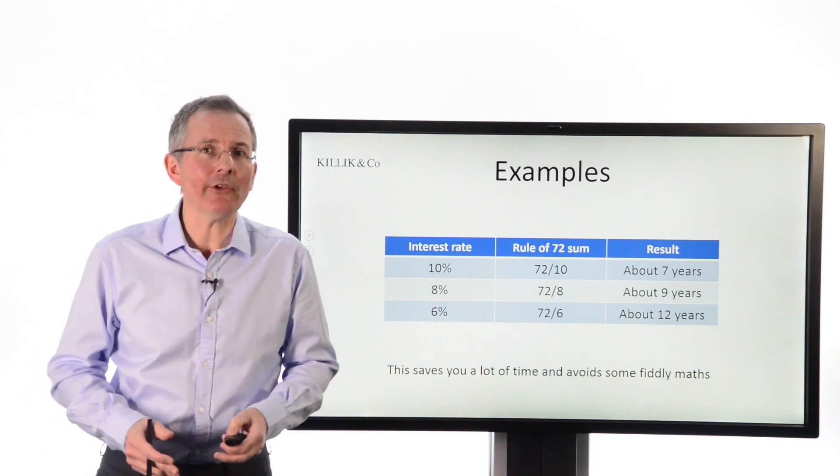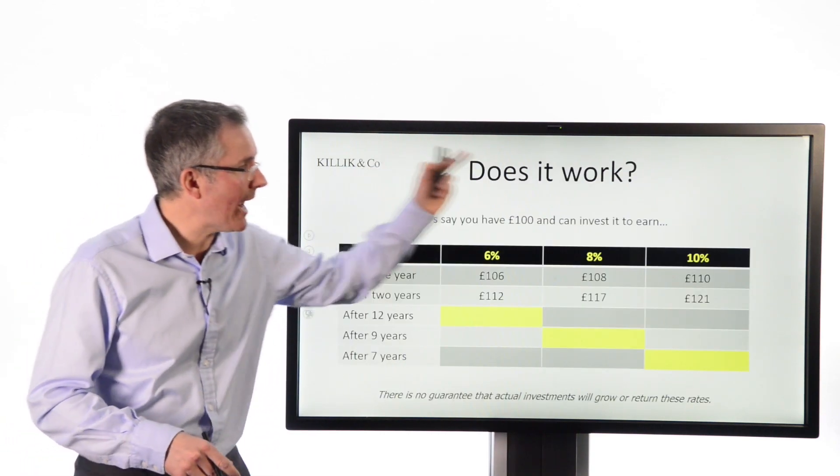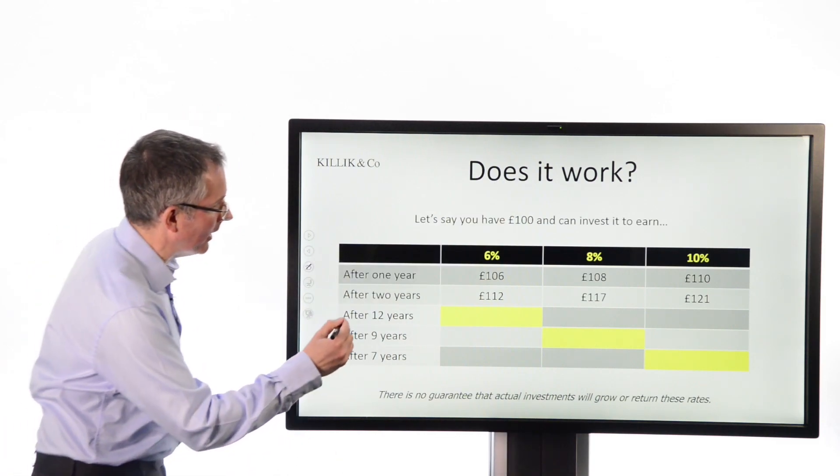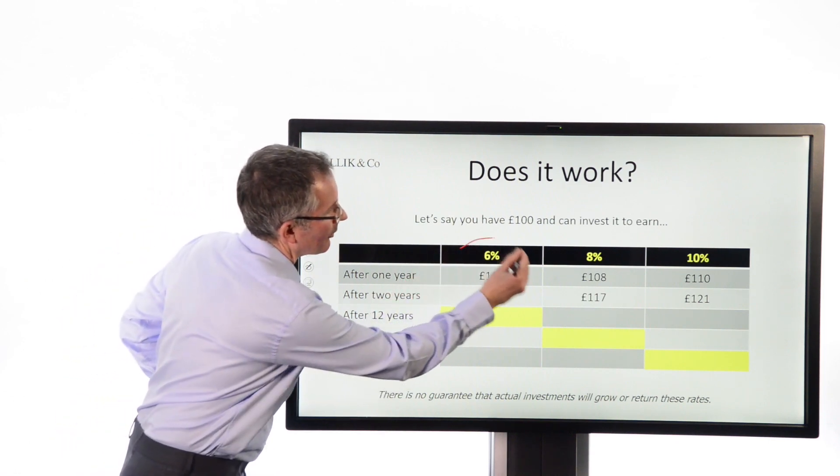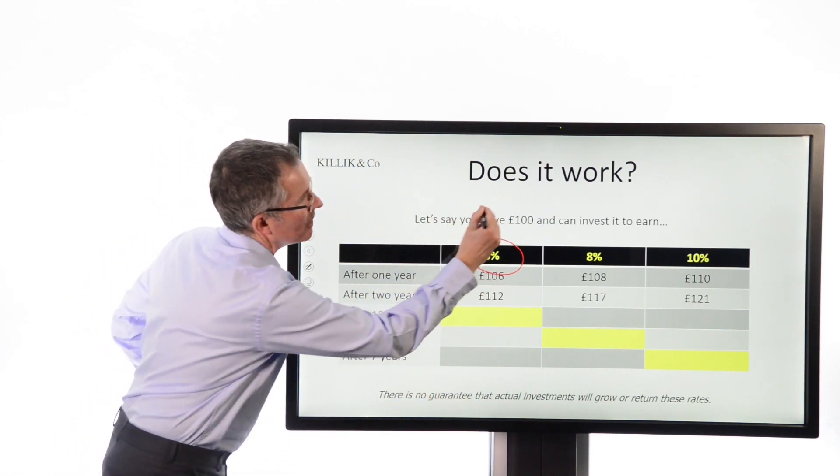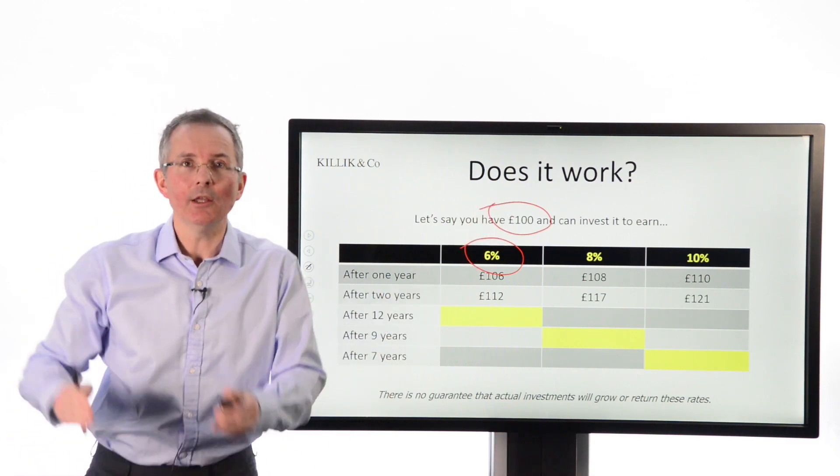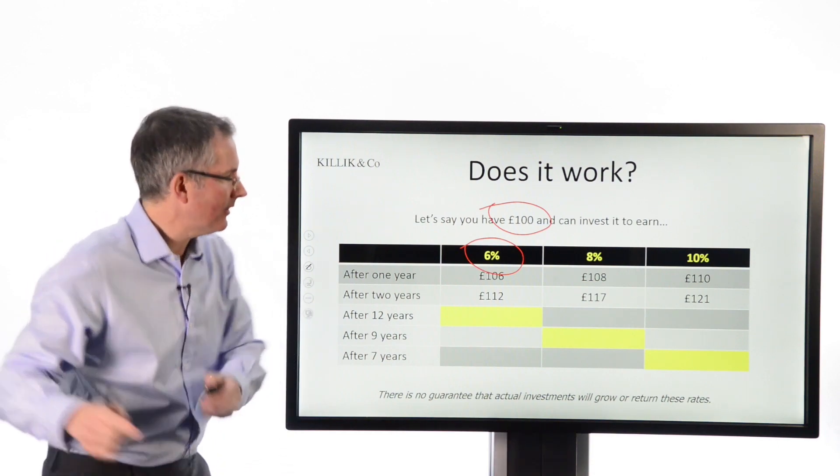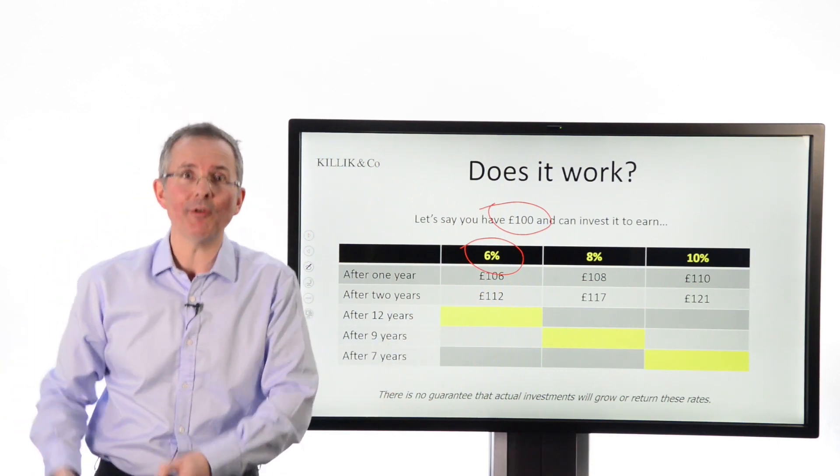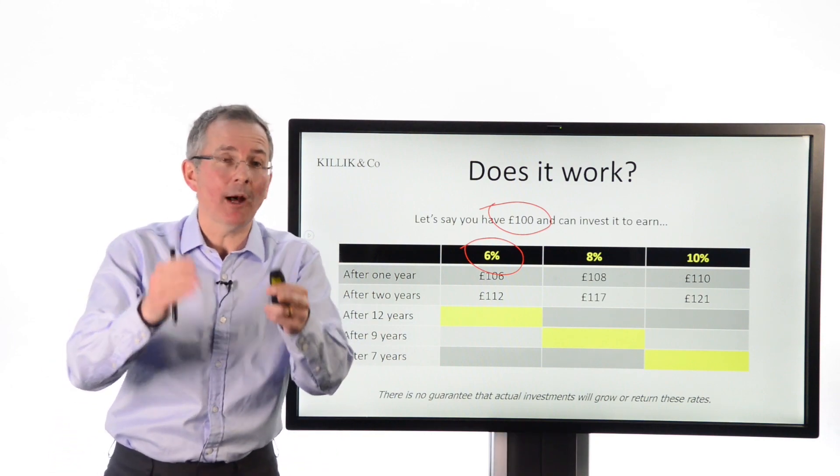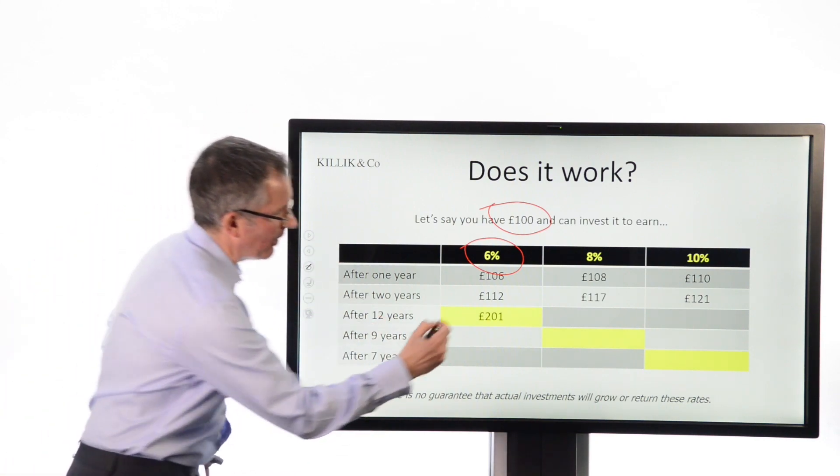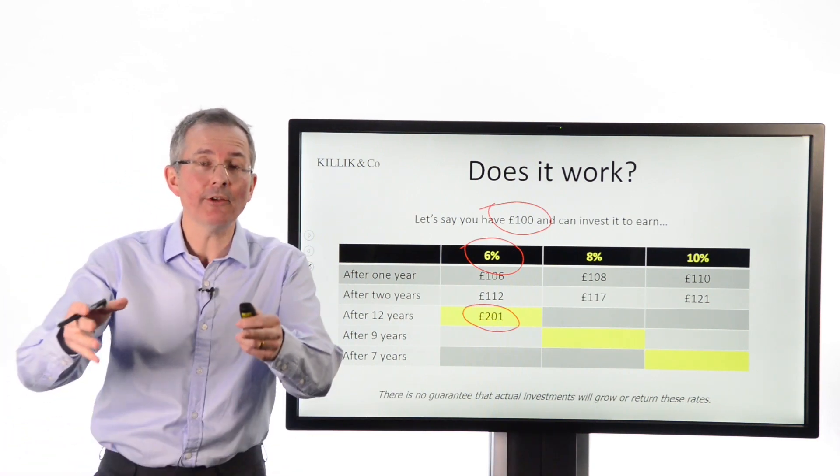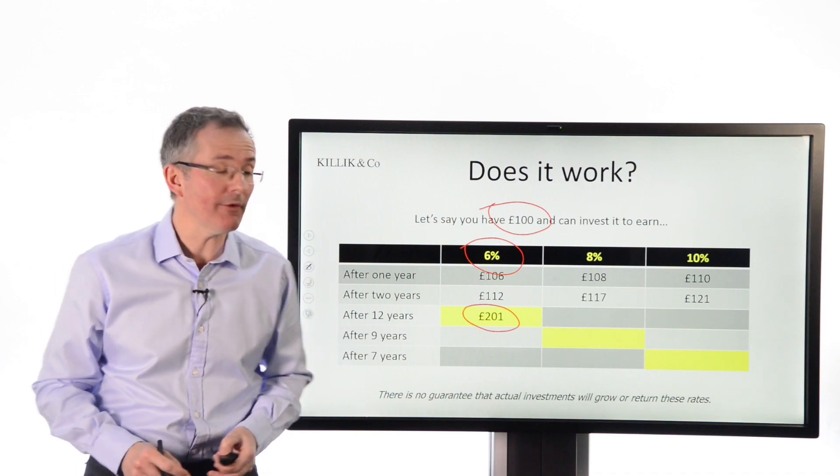Now, how accurate is it? Well, just to demonstrate that, I've done a quick proper calculation using a proper compounding calculator. If you apply 6% as a rate to an original sum of £100, so after one year you've got £100 plus £6, then you take the £106 and add 6% on top to give you £112, then you take the £112 and add 6% on top, and so on, you get to the point where you've doubled your money after around 12 years: £201. Not exactly £200, but near enough. So there's your rule of 72 demonstrated to work.